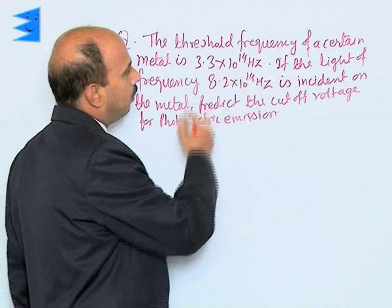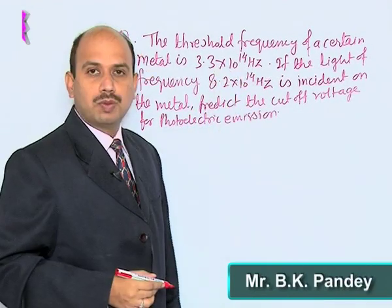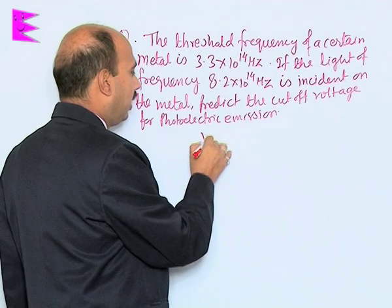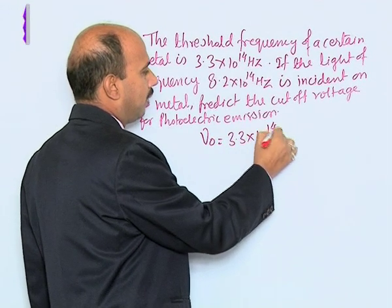Now, see the threshold frequency of a certain metal is 3.3×10^14 Hz. So, we are given ν₀ = 3.3×10^14 Hz.